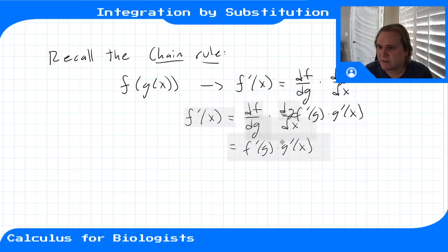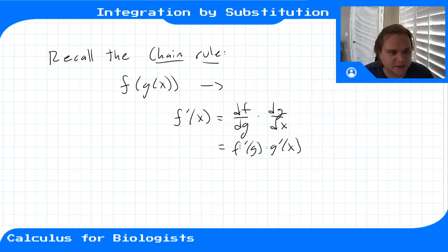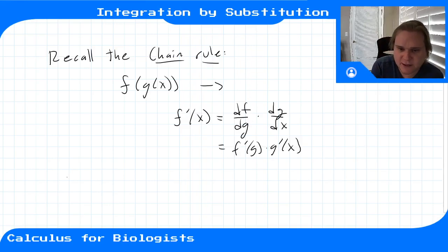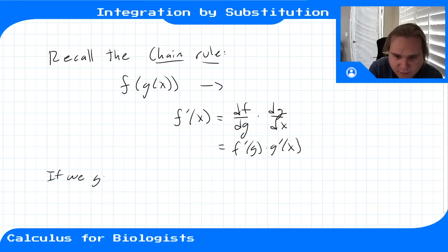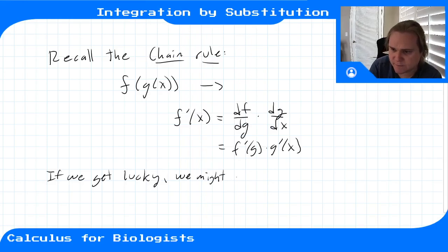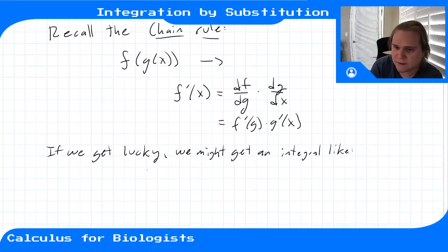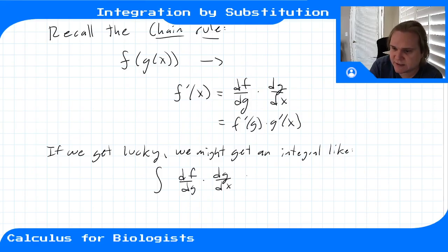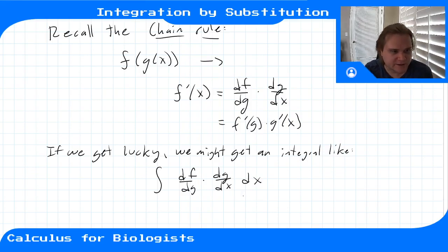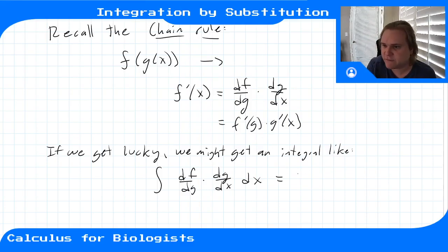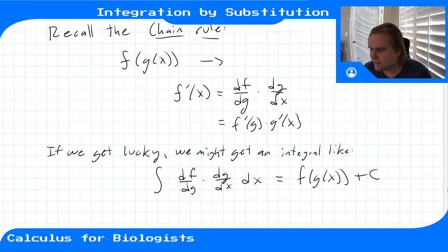The rule we're going to work on today is basically the chain rule in reverse. If we get lucky, we might find an integral that looks like the integral of df/dg times dg/dx dx. That's exactly the chain rule sitting inside the integral, so we know the anti-derivative would be f of g of x plus a constant.